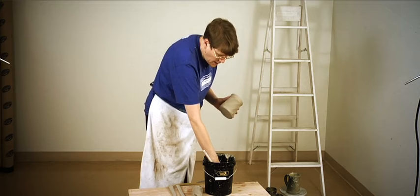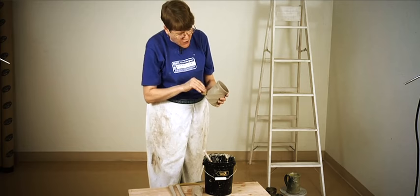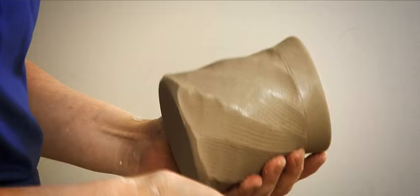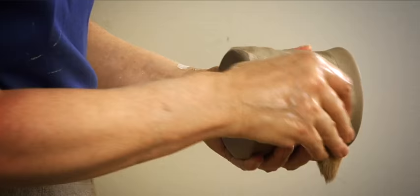Before I put the handle on, I usually take a minute and clean all the little goobers off, because it's easier to do it before the handle's on there. And I do that with a damp sponge, and it's a fairly quick process. You can come back later, of course, and do some more cleaning up.